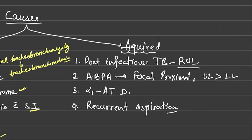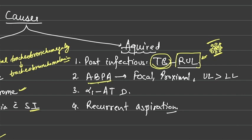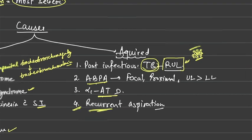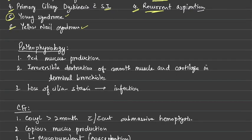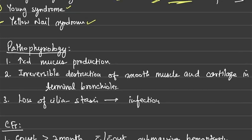Among acquired causes of bronchiectasis, the most common in India is tuberculosis. In post-TB patients, the lesion is located in the right upper lobe, where bronchiectatic changes are found on X-ray and CT scan. ABPA is the second most common cause, followed by alpha-1 antitrypsin deficiency and recurrent aspiration.